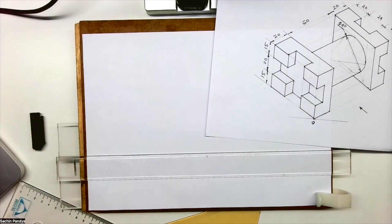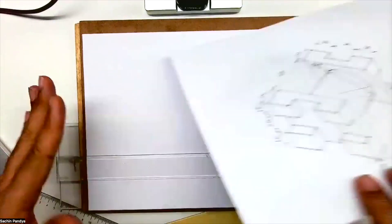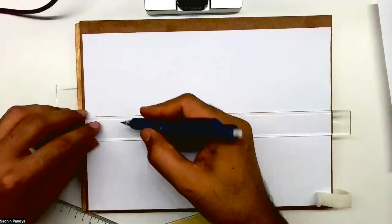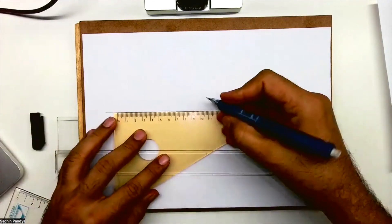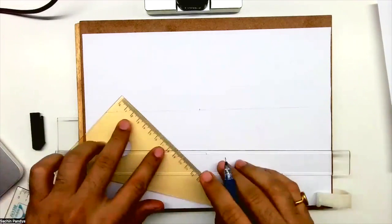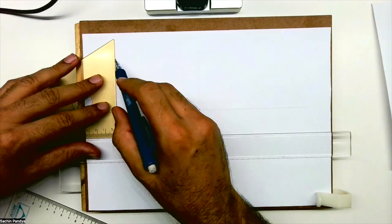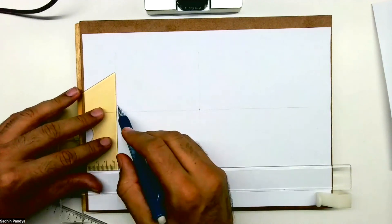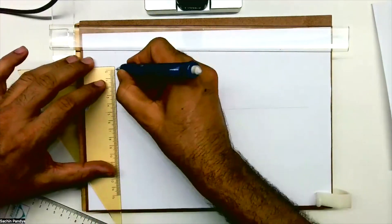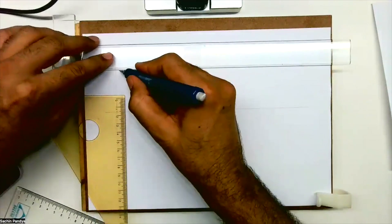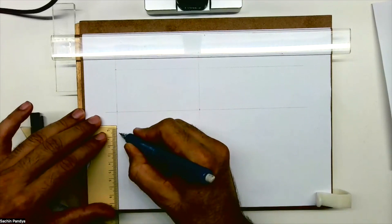First we will draw the layout. I need to draw length, width, and height. Length is 100, so I will draw it on the right side since we're using first angle. I'll take 100 for length, height is 50, and I'll extend this. Height is 15.